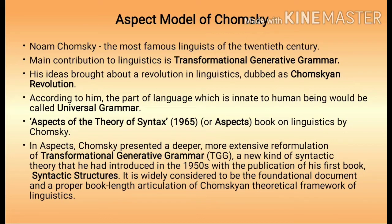innatism for explaining the acquisition of language. He claims that it becomes possible for a human child to learn a language through the linguistic faculty with which the child is born, and that the use of language for an adult is mostly a mental exercise. His ideas brought about a revolution in linguistics, dubbed the Chomskyan Revolution. According to him, the part of language which is innate to human beings would be called Universal Grammar. His philosophy holds a strong propensity to rationalism in search of a cognitive foundation, and his theory is a continuation of analytic philosophy.